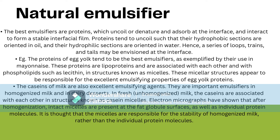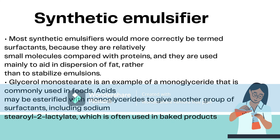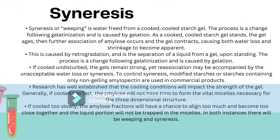It is thought that micelles are responsible for the stability of homogenized milk rather than individual protein molecules. Regarding synthetic emulsifiers or surfactants — most synthetic emulsifiers would more correctly be termed surfactants because they are relatively small molecules compared with proteins and are used mainly to aid in dispersion of fat rather than to stabilize emulsions. Glycerol monostearate is an example of a monoglyceride commonly used in food. Acids may be esterified with monoglycerides to give another group of surfactants, including sodium stearoyl-2-lactylate, which is often used in baked products.